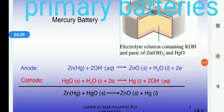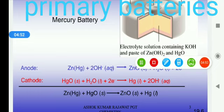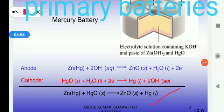At anode, zinc reacts with potassium hydroxide and gives ZnO, H2O and two electrons. At cathode, HgO, H2O plus two electrons gives Hg plus 2OH⁻, and we will get the final overall cell reaction like this.